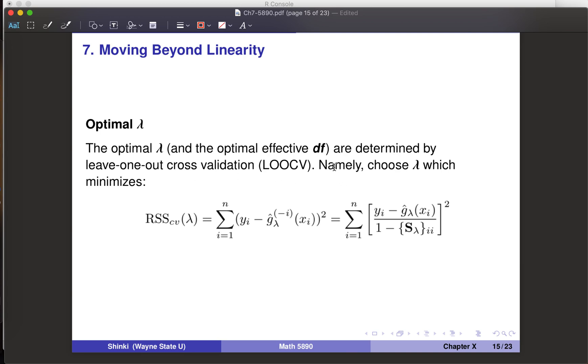Leave-one-out cross-validation error is defined as RSS lambda. Basically, g hat lambda negative i is the fitted curve by smoothing spline with lambda, but i's observation excluded when we fit the curve. Then yi minus fitted value squared. We take summation over i equals 1 to n. We have to fit the regression model n times, so it takes time.